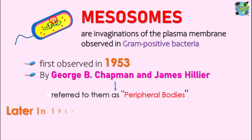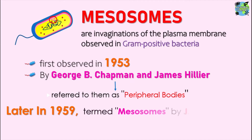But later on, in 1959, they were called as the mesosome by the scientist J.D. Robertson. This structure, which was observed as the peripheral bodies, was referred to by J.D. Robertson using the term mesosome. He introduced the term mesosomes.